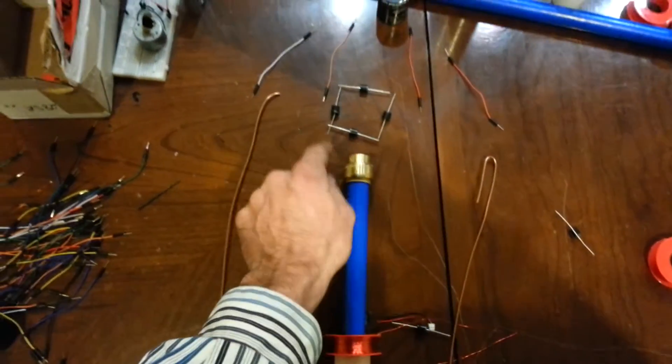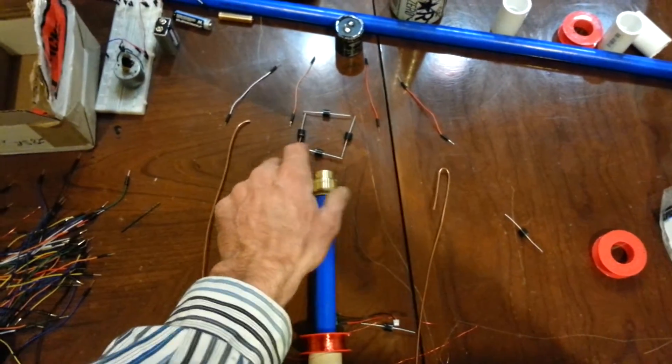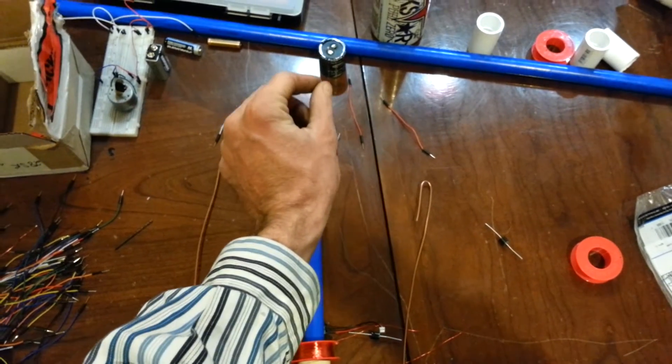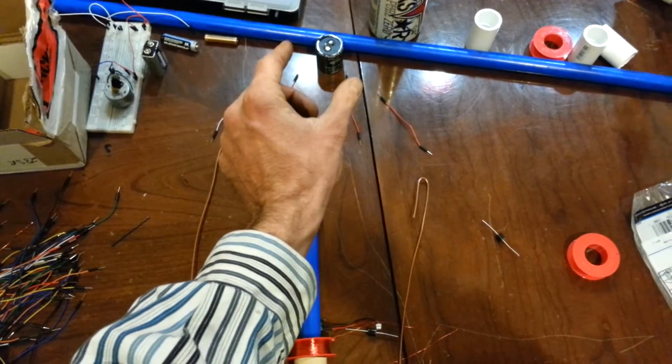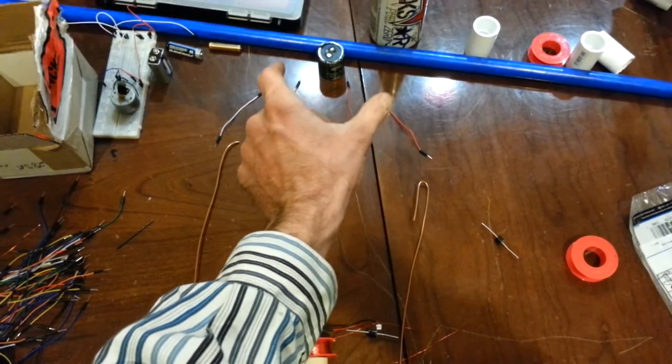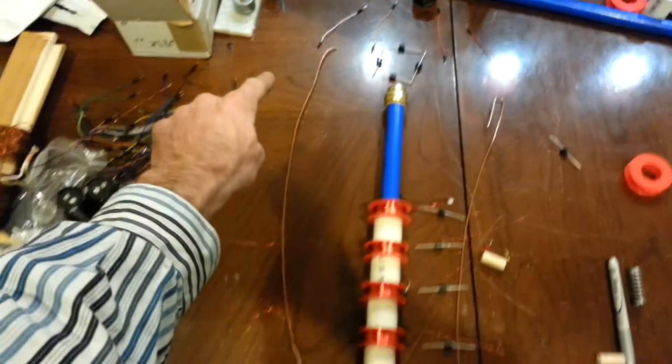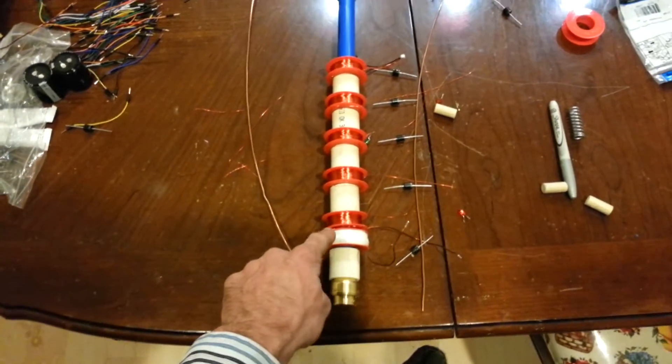From there it goes up into a bridge rectifier and the bridge rectifier it goes up into a capacitor bank. Then from the capacitor bank the electricity flows down through on this negative side, it goes all the way to the bottom of this pulsing coil, the driver coil.